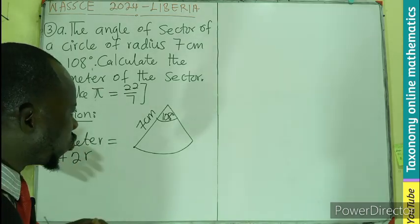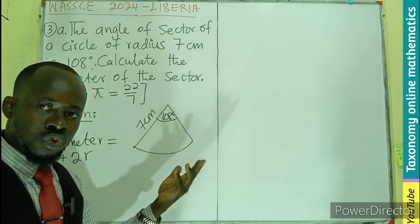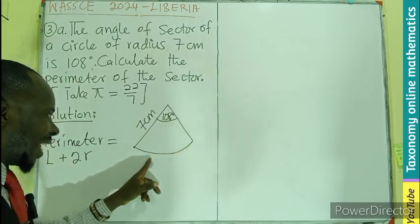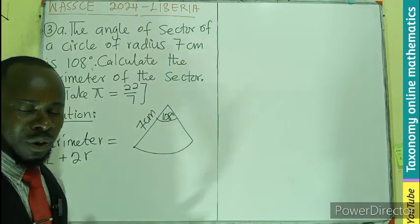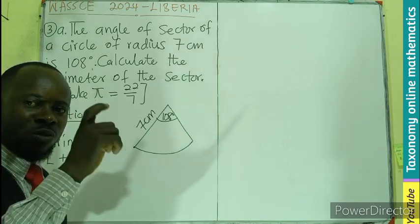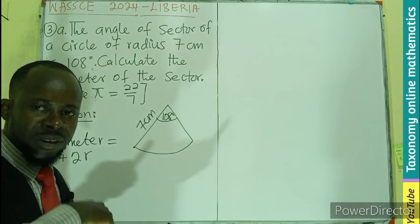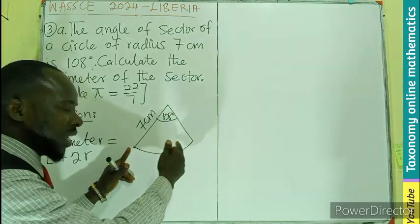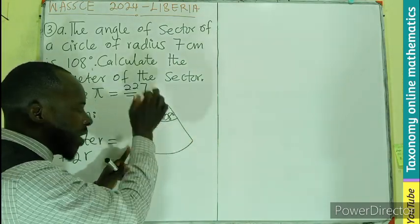Then the only thing we need is the length of this arc. How do we find the length of an arc? It's just a small portion of the circumference.